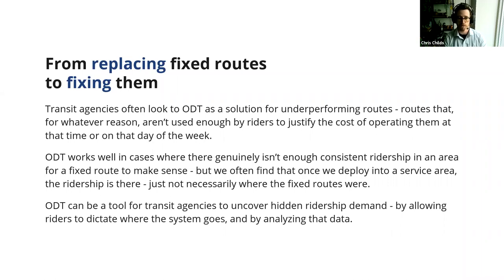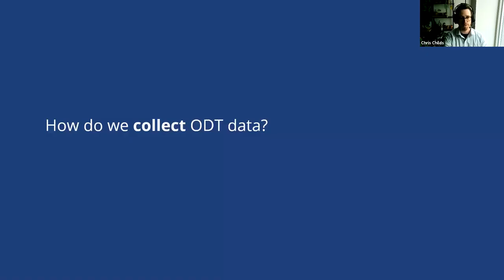Once we launch our ODT, we can find those patterns. ODT gives us access to data that is kind of hidden to fixed route services — we'll talk about how in a moment. The key takeaway is that if we end up in a case where it looks like a fixed route could work here, we can collaborate with the agency to implement it, figure out exactly where it should go, and how to best fit the ridership demand in that area.